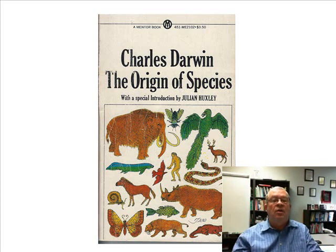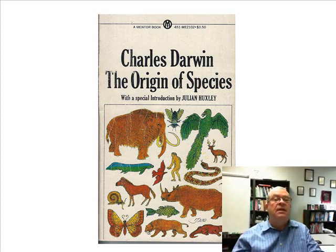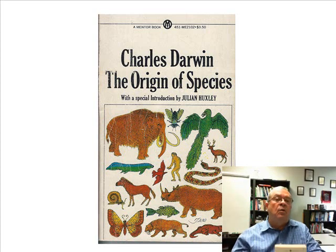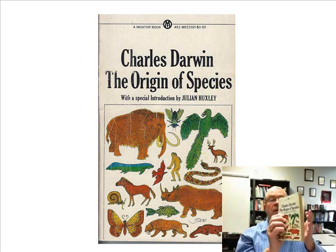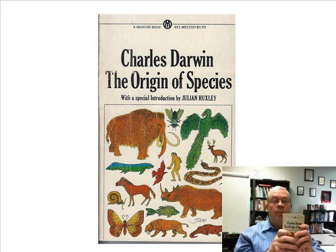That prevailing idea was called fixity of species — the idea that species are fixed and never change. That was the prevailing idea of most folks, including scientists, at the time Darwin originally published his book. He had many dissenters among the scientific community as well as the religious community. What Darwin's book did was take the idea of fixity of species and basically smashed it to a pulp, turning it into nobody's idea.